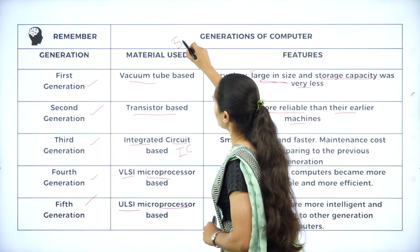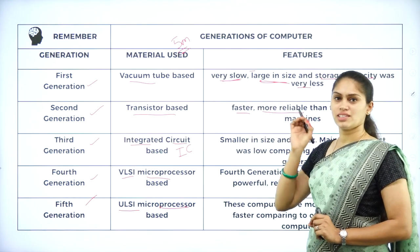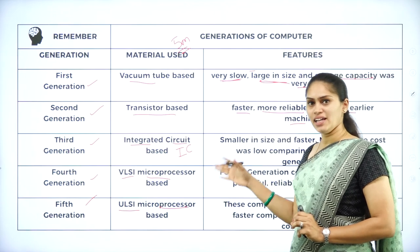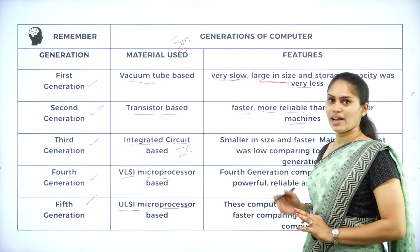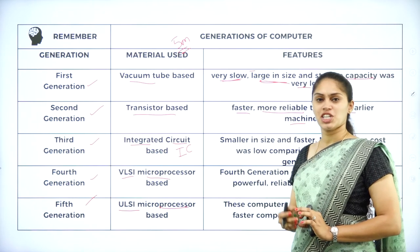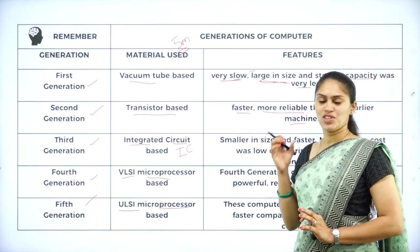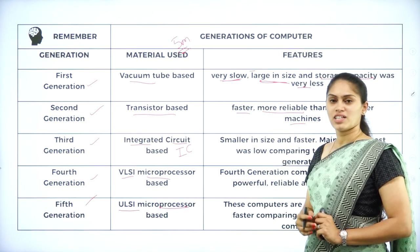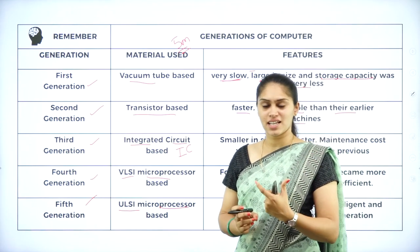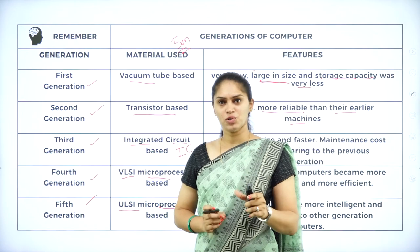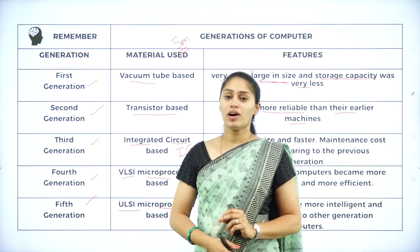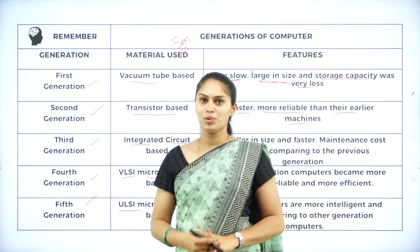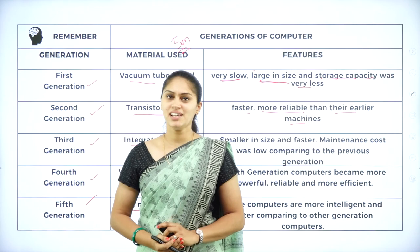This topic is important for 5-mark questions. For 1-mark questions, expansions like UNIVAC, EDVAC, VLSI, LSI, and ULSI may be asked. For 2-mark questions, they may ask you to mention any two features of a particular generation. For 5-mark questions, you must write the duration, basic material, features, and one or more examples for each generation. I hope you all understood today's session on generations of computers.